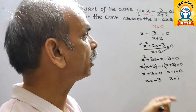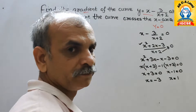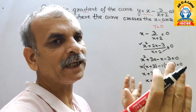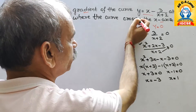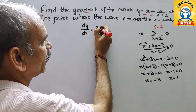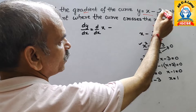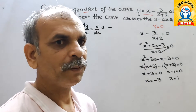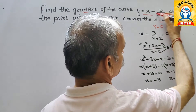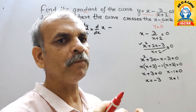Now we find the gradient, which means we differentiate the expression. We use differentiation with the scalar multiple rule — bringing (x+2) to the numerator, so the power on the denominator becomes -1.